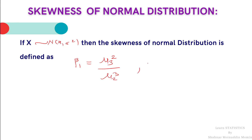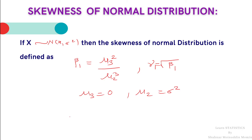One can write the coefficient of skewness as gamma 1, equal to the positive square root of beta 1. We know that the third central moment of a normal distribution is 0, and the second central moment is sigma squared.